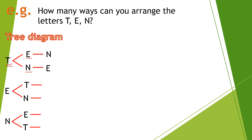The same thing goes with the next branch. If we have E, T, we can add N. Next we have E, N, we can add T. For the next one, N, E, we can add T as well. We have N, T, we can add E. So if we count the number of branches we have made, we have 1, 2, 3, 4, 5, 6. So meaning, we have 6 possible ways to arrange the letters T, E, N. And this is what a tree diagram is.